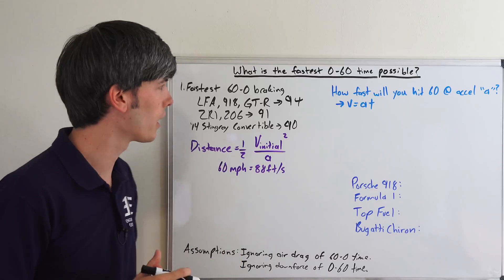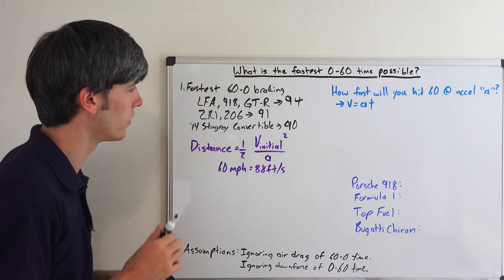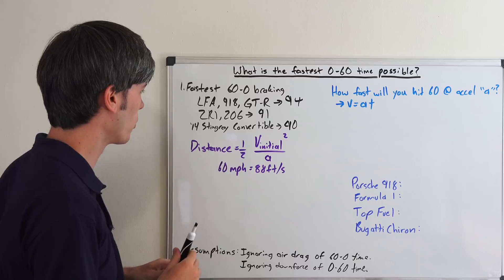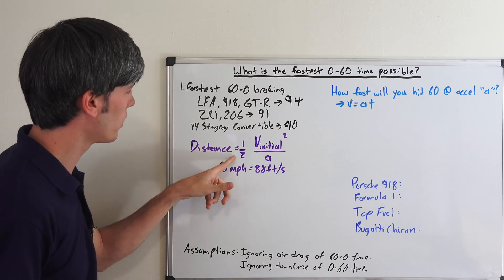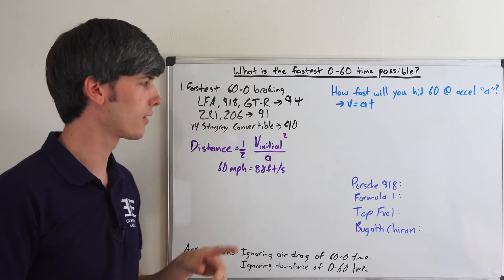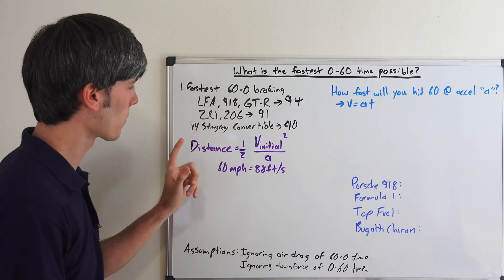And I realize some of you are going to be angry that I'm using Imperial units, but you clicked on a video that said, what is the fastest 0 to 60 time, which very commonly refers to miles per hour. So, you got yourself into that trap. Now, what we have here is the equation for braking distance. If you've watched my video on braking distances, you'll know where this comes from. If you want to know where it comes from, you can watch that video.